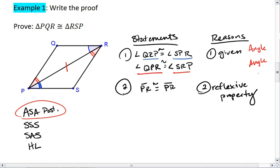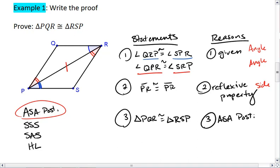This gives us the side part of angle side angle. Well now, since we have all three parts, we can say that triangle PQR is congruent to triangle RSP. And that is by angle side angle postulate. And that completes our proof.